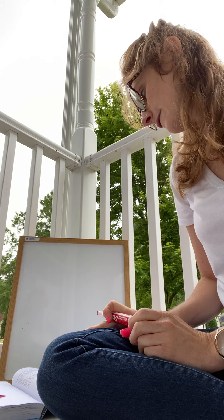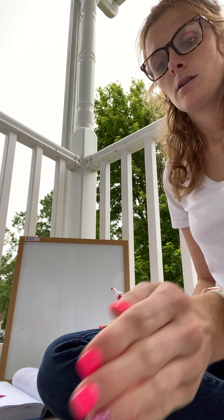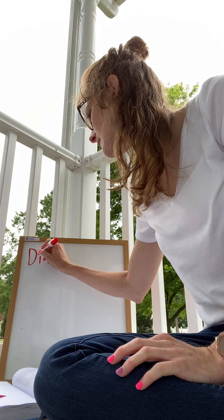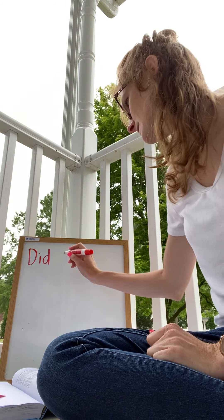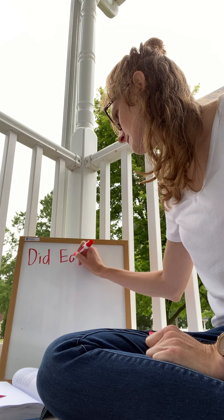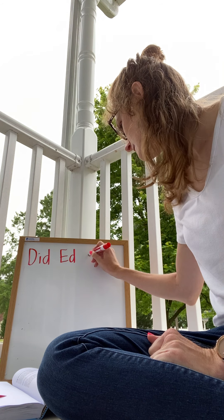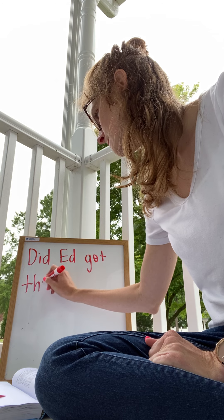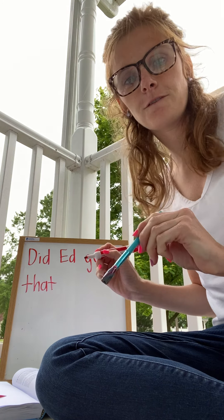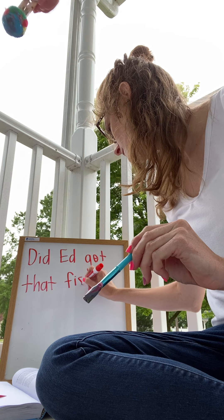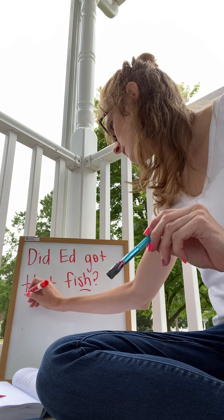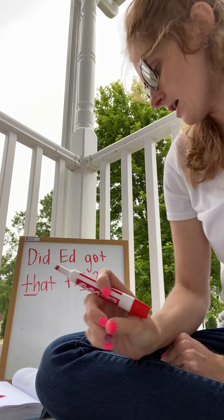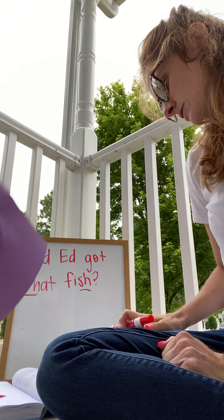So I'm going to go over to our whiteboard, and our first sentence is a question. It starts with the word 'did.' Ed is a name, so we need to have a capital letter. Did - Ed - get - that - fish. Now, the word 'fish' and 'that' have the digraph, so let's read it: Did Ed get that fish? Good job. Read it again to yourself: Did Ed get that fish?